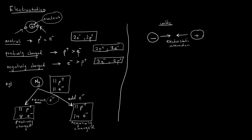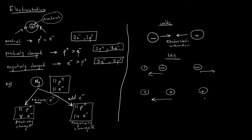An electrostatic attraction occurs when we have two opposite charges — a negative and a positive charge attract each other and move closer. If they are like charges, for example two negative charges, because they are the same they repel each other and move away. Equally, two positive charges also repel each other — this is called an electrostatic force of repulsion. Unlike charges move closer; like charges move away from each other.